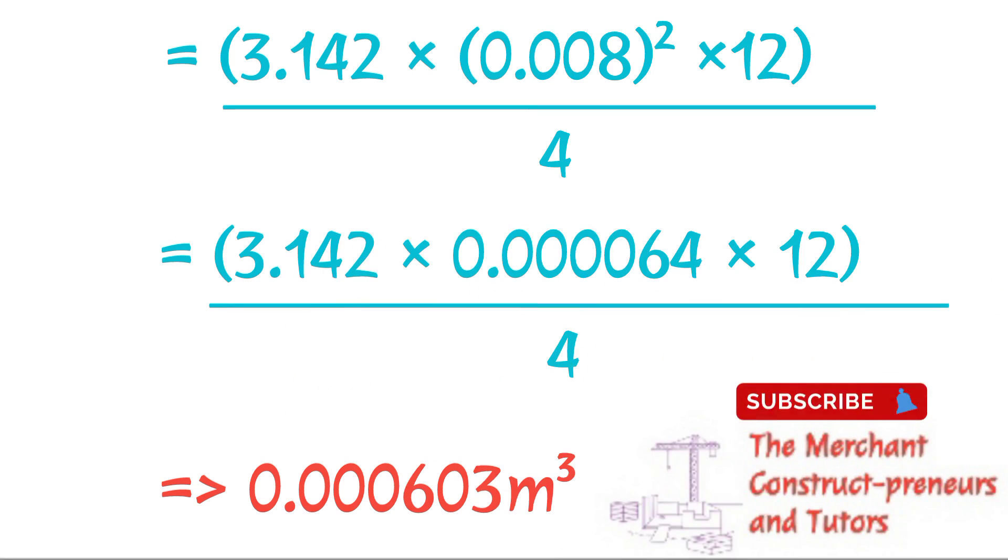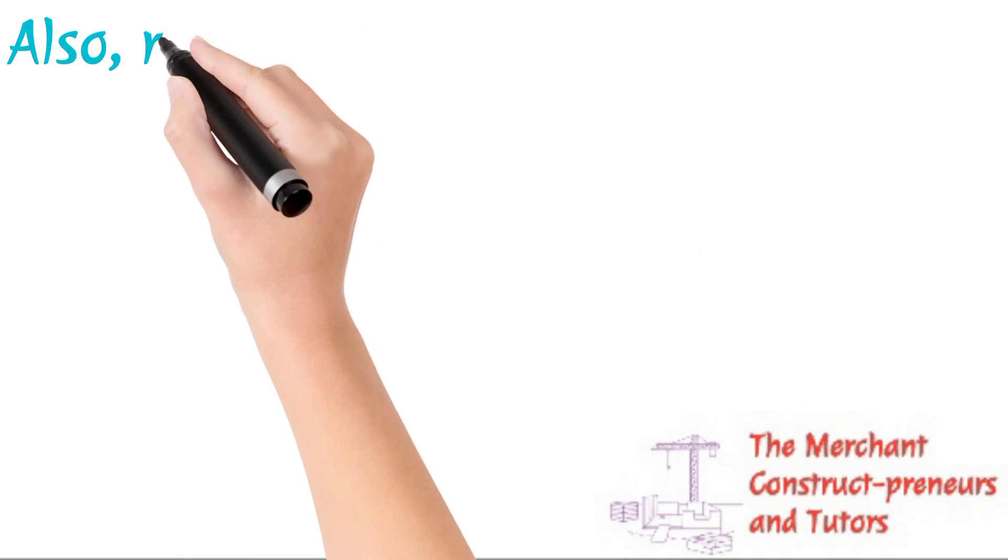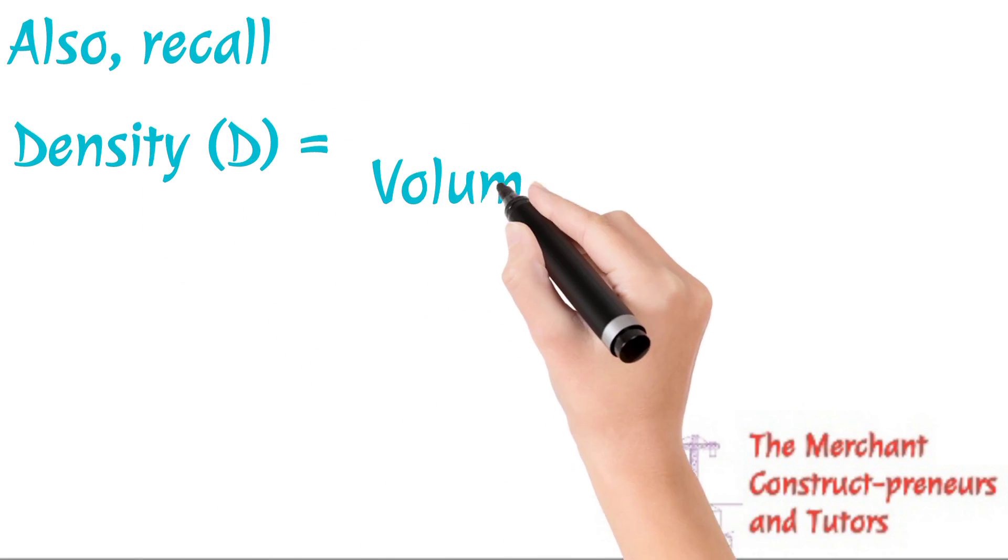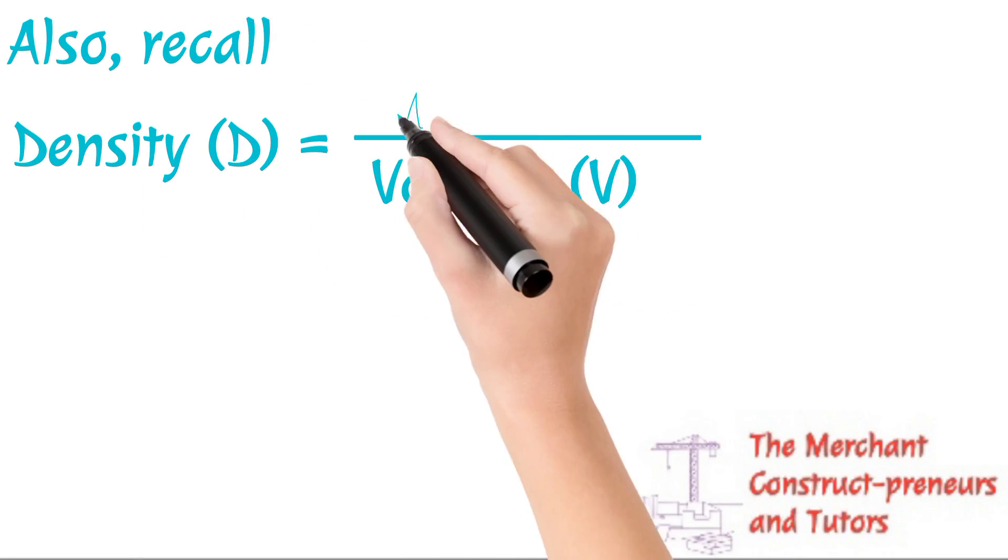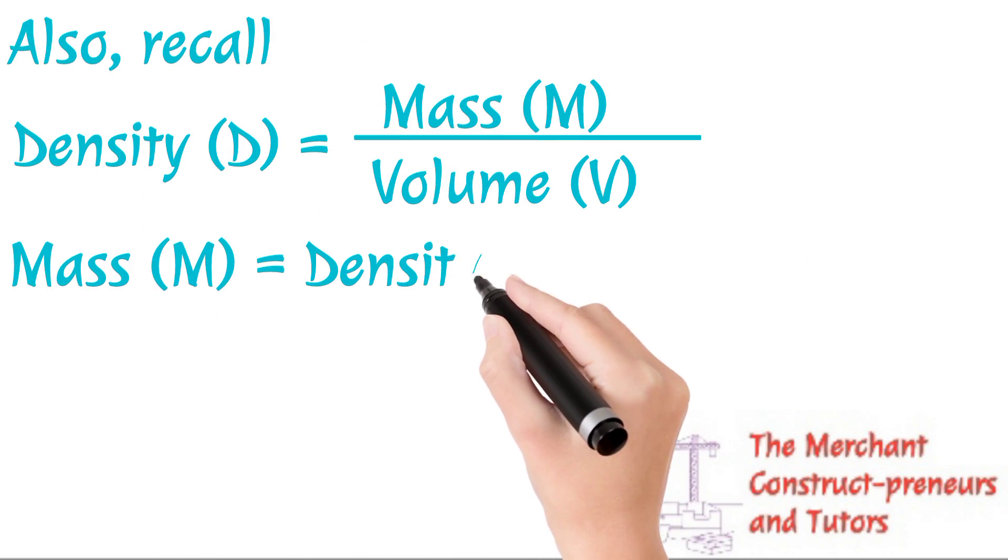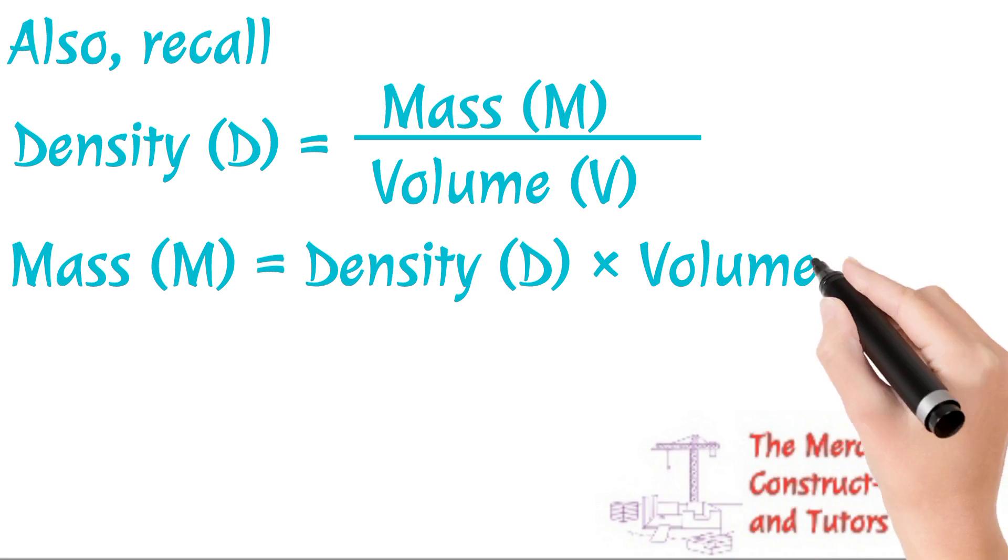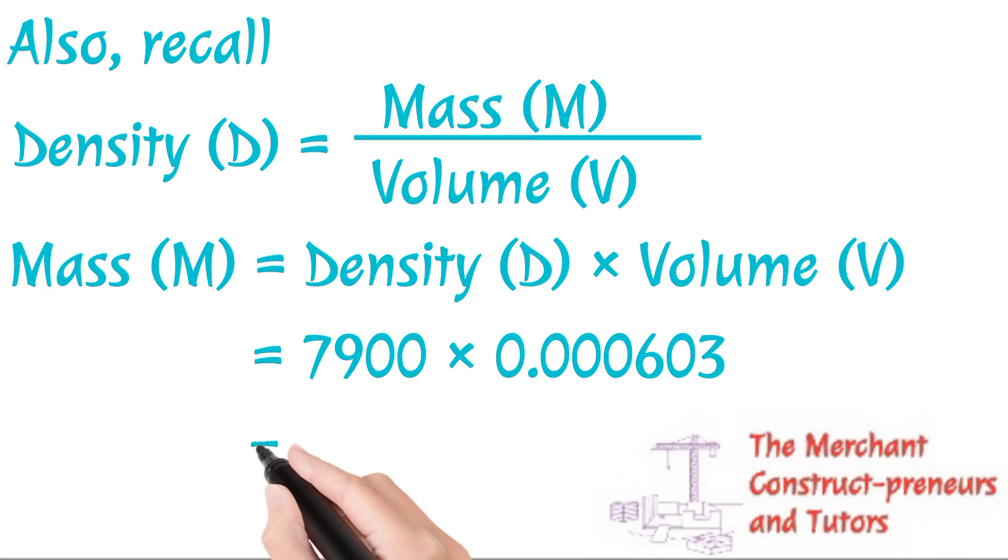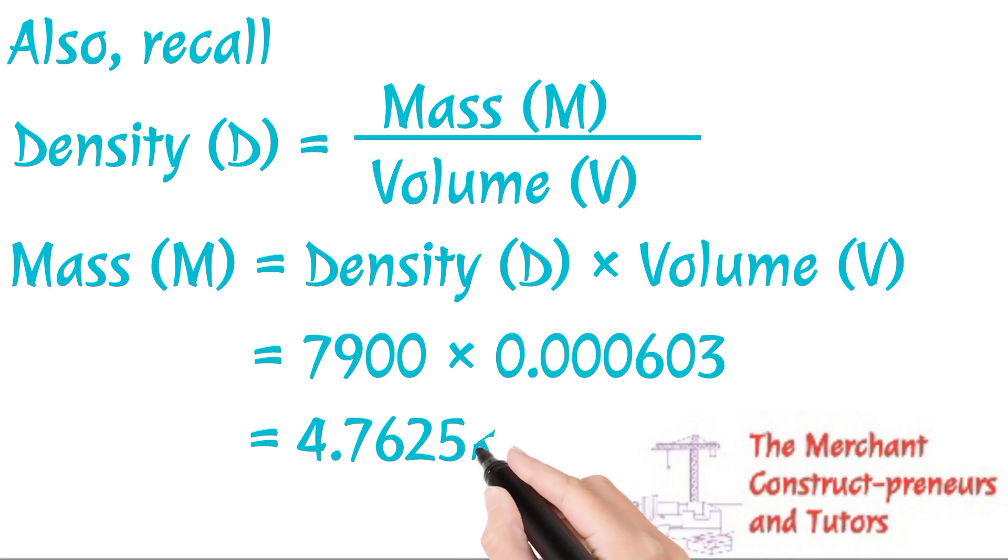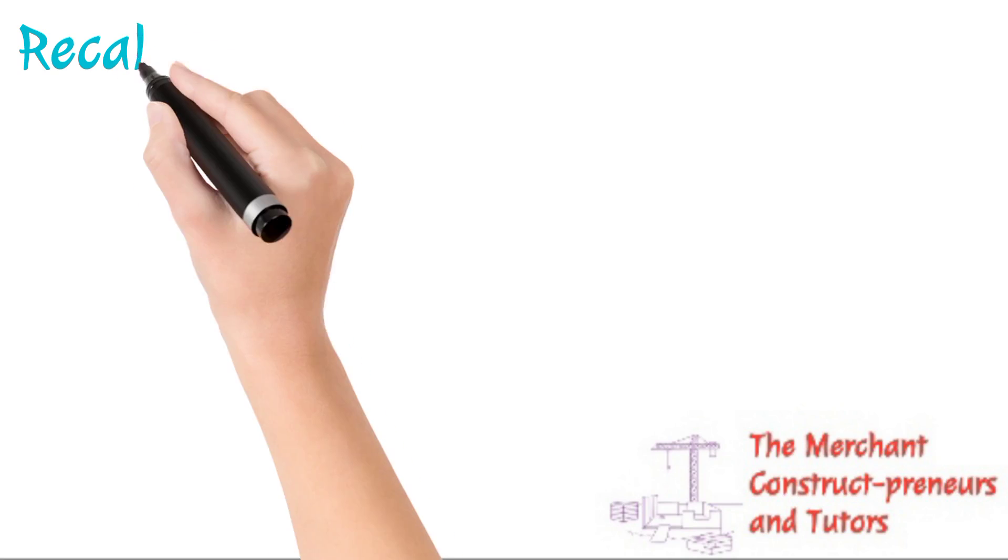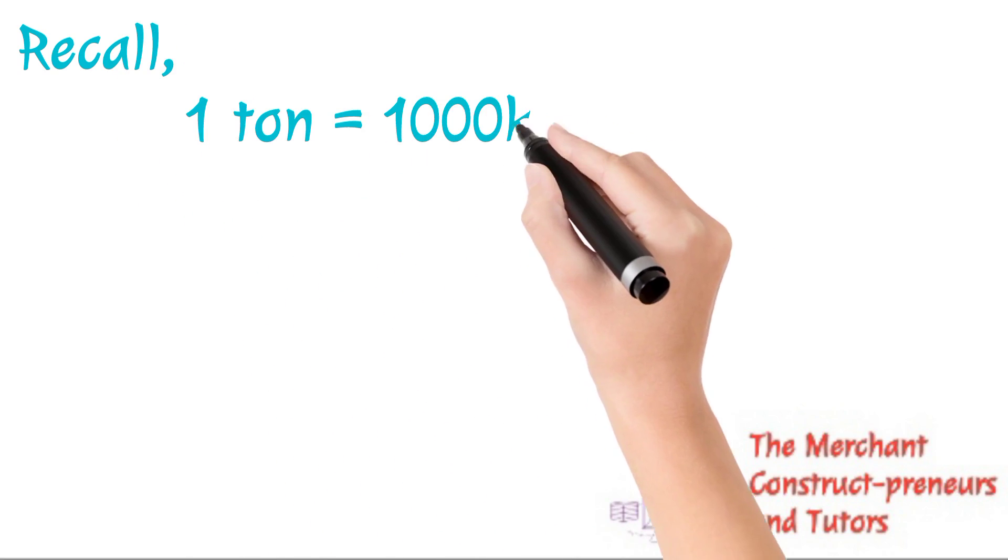So now we are going to calculate the mass of this reinforcement. We're going to use density. The formula for density is mass divided by volume. So we have gotten our volume, now we want to get our mass. So using the formula, we have mass equals density multiplied by volume. Density that we have is 7900 multiplied by 0.000603, so we have it at 4.7625.